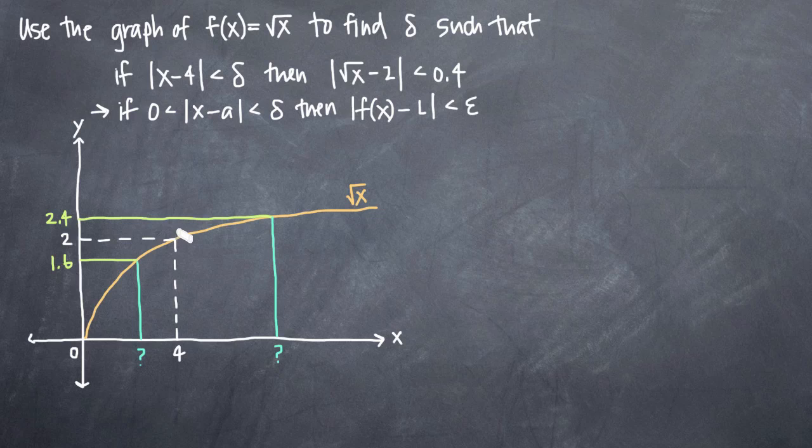Remember that with problems like this, we're usually asked to find one of two things. We're either asked to find delta or epsilon. If you have to find delta, you're usually given epsilon. And if you have to find epsilon, you're usually given delta.